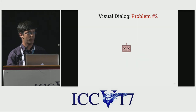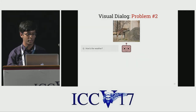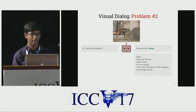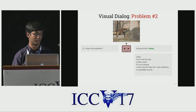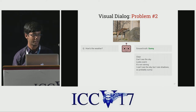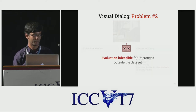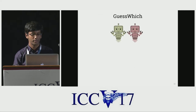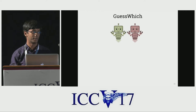Another problem is that given an image and a question like 'how's the weather,' there is only one ground-truth answer in the dataset. However, there can be multiple possible ways of correctly answering that question, but these are artificially treated as incorrect because they're outside the dataset. So in an attempt to fix some of these problems, in this paper we propose GuessWhich, an image-guessing game between Qbot and Abot.